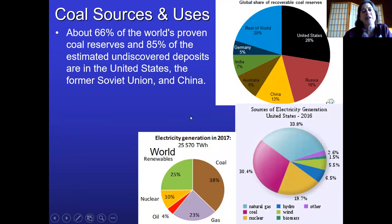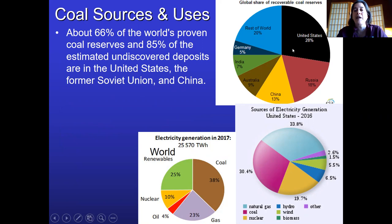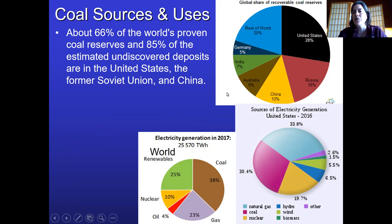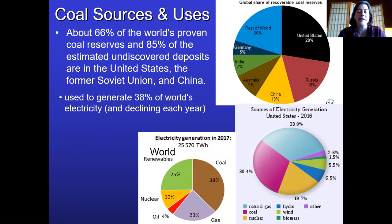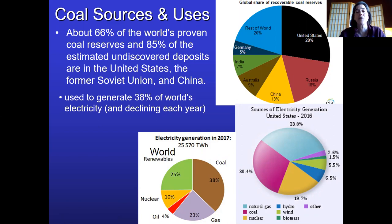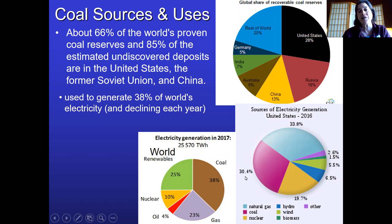The United States has a ton of coal — over a quarter of the world's known reserves. This is one reason some people feel the US should still be using coal. As of 2017, coal made up 38% of electricity generation worldwide. Coal is on the decline, though. In the United States in 2016, coal was making up 30% of electricity generation.